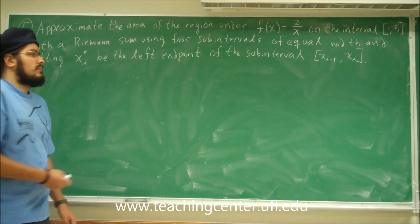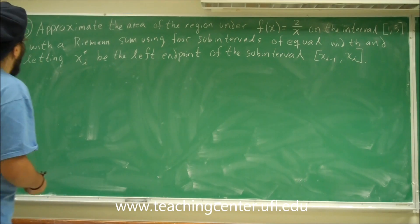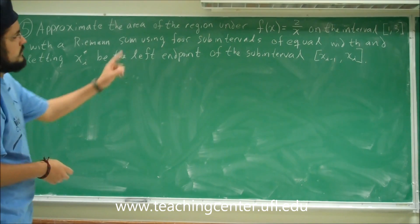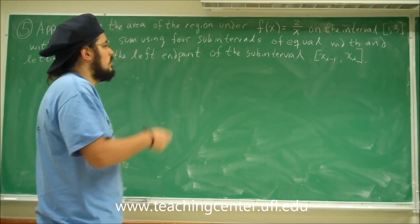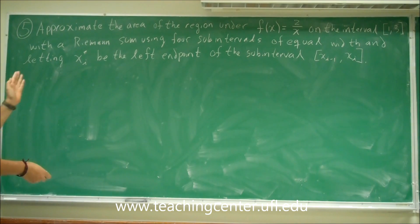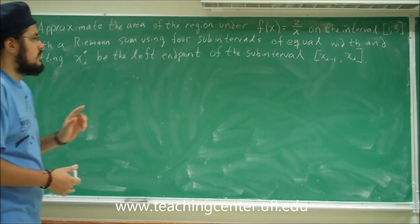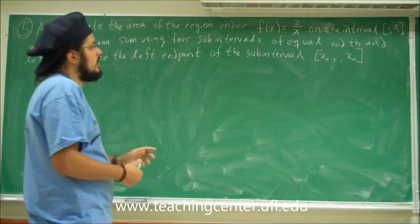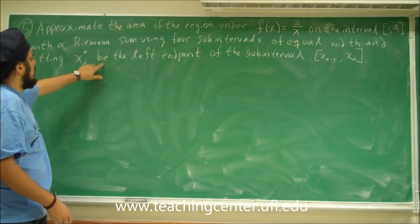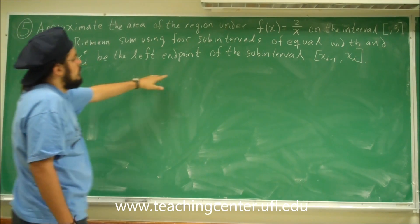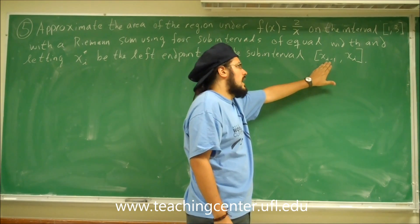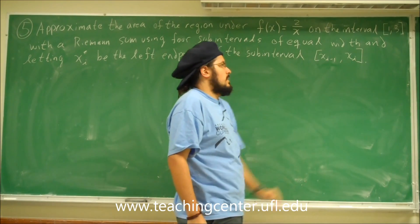This is problem 5. Problem 5 reads: approximate the area of the region under f(x) = 2/x on the interval [1, 3], using a Riemann sum with 4 subintervals of equal width, letting x sub i star be the left endpoint of the subinterval [x sub i minus 1, x sub i].